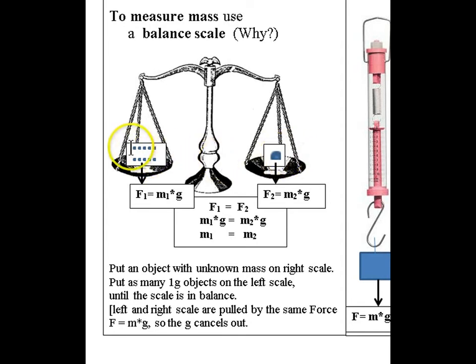On the left scale you place masses of let's say one gram and you place as many of those little masses of one gram on the left scale until the grams you have put on the left scale are the same number of grams that are on the right scale.